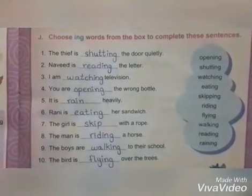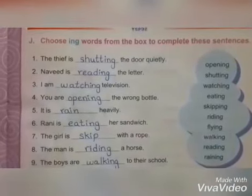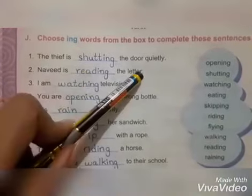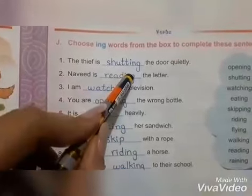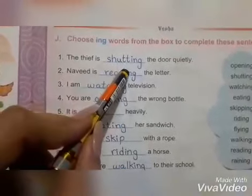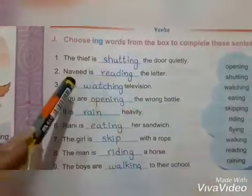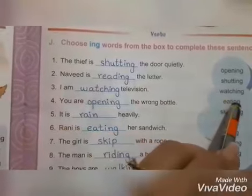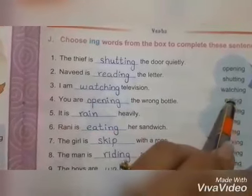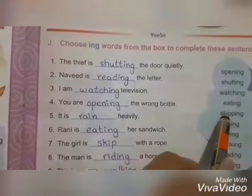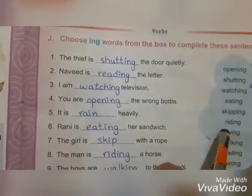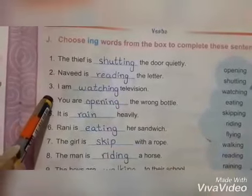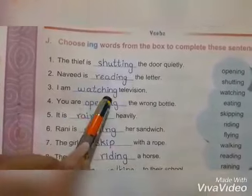We have to choose the suitable words for the sentences. The first one is: 'The thief is ___ the door quietly.' What is the thief doing? The thief is shutting the door quietly. Number two: 'Navit is ___ the letter.' We can say Navit is reading the letter — not watching or skipping.